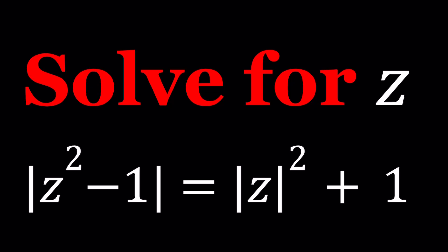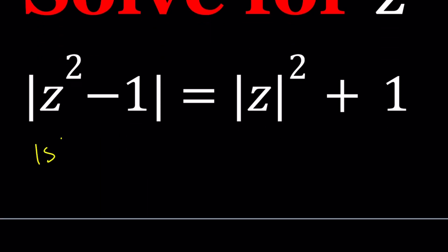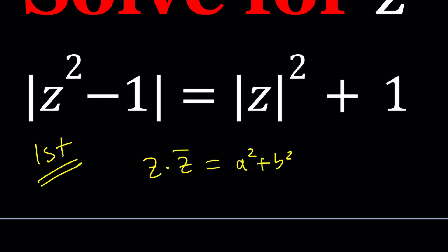I'll be presenting three methods, though the third method might be a little brief. For the first method, I'm going to use an identity. What is the absolute value of z squared? Remember, when you multiply a complex number by its conjugate you get a squared plus b squared if z equals a plus bi.